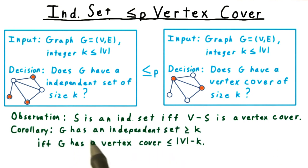As a corollary then, G will contain an independent set of size at least K if and only if it has a vertex cover of size at most V minus K.